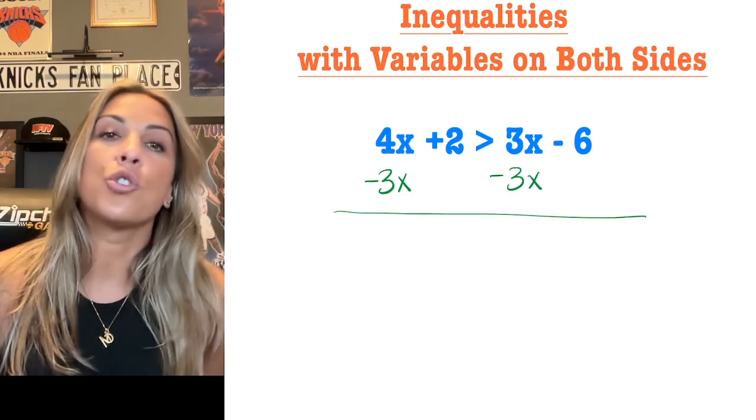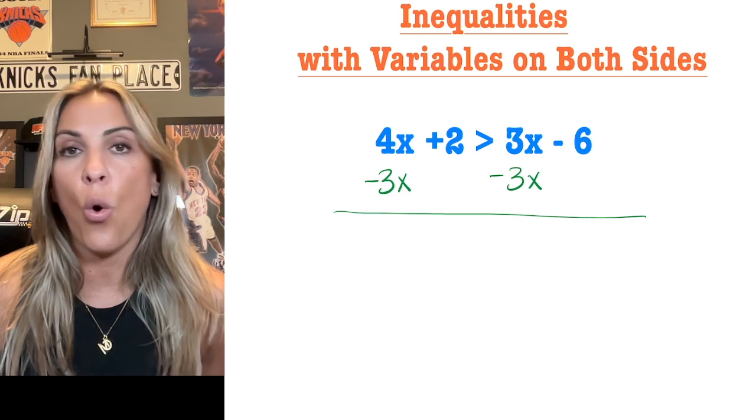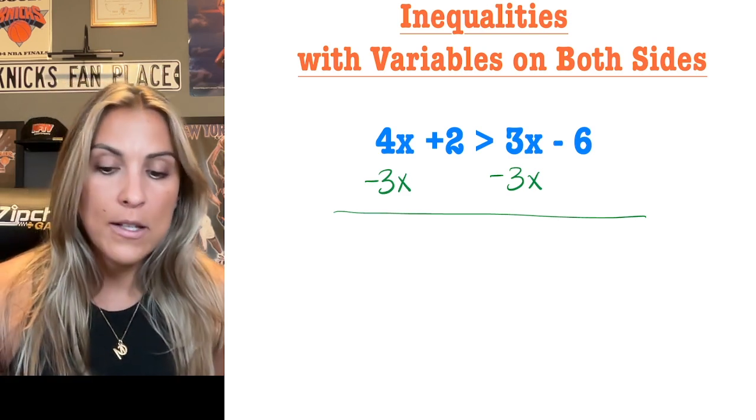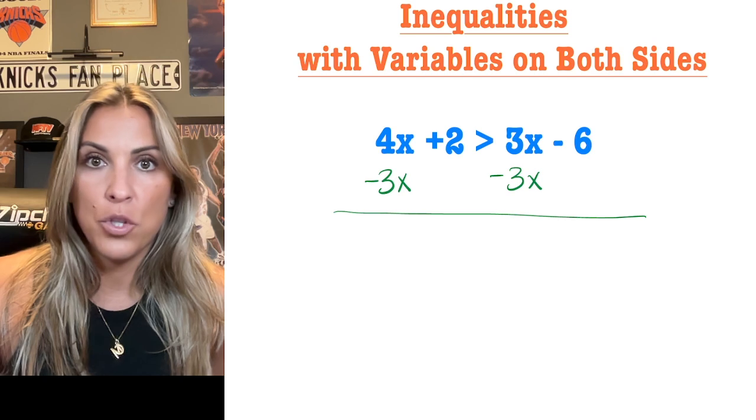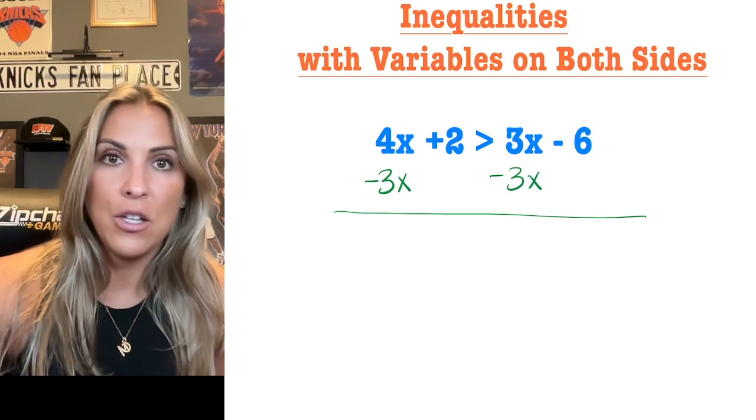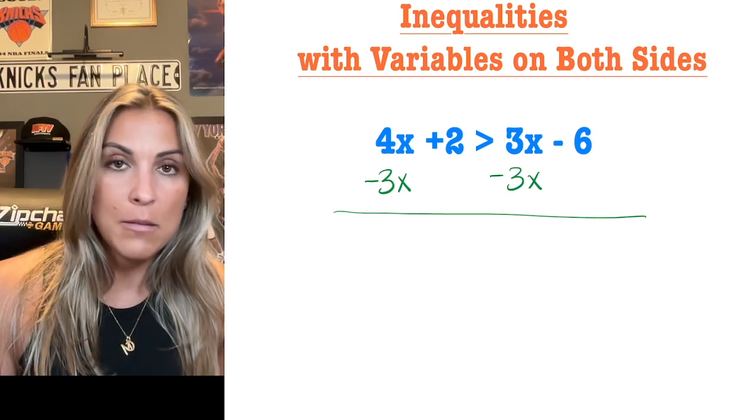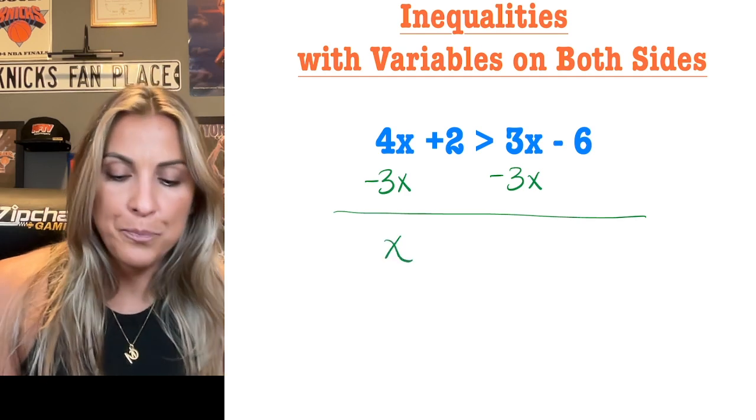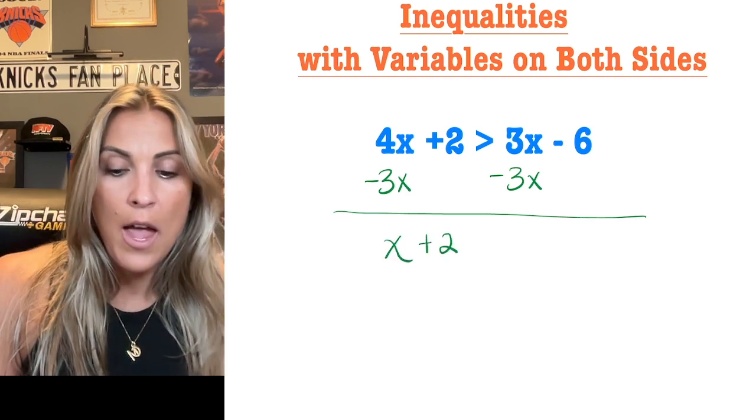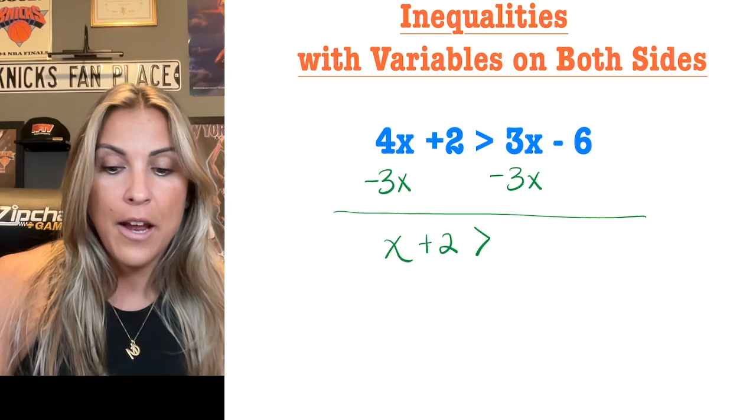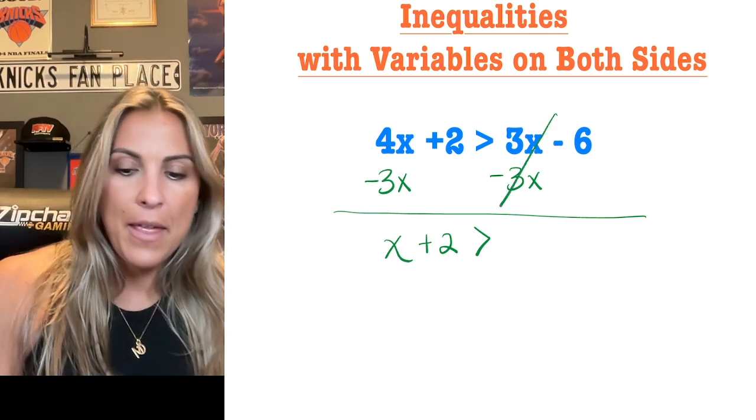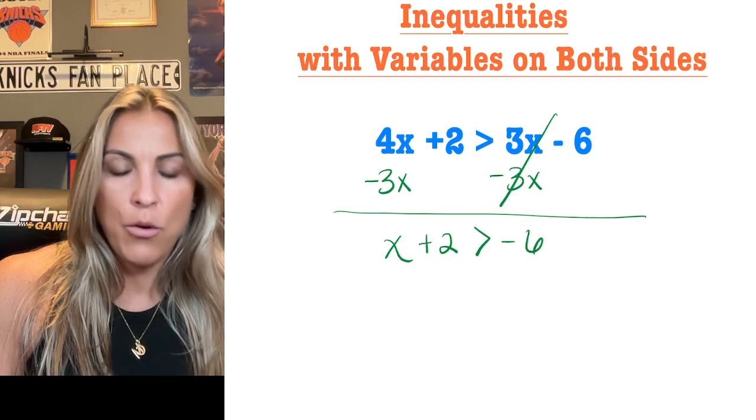Now when you subtract with variables remember you can only add or subtract when they are like terms. So I wasn't able to take that 3x away from the 2. It has to come away from a like term. So I'm doing 4x minus 3x. That's going to give me 1x or just x on its own. I'm going to bring down the plus 2. I'm going to bring down that greater than sign. 3x minus 3x is 0, so it cancels out and then I have minus 6 to bring down over here.